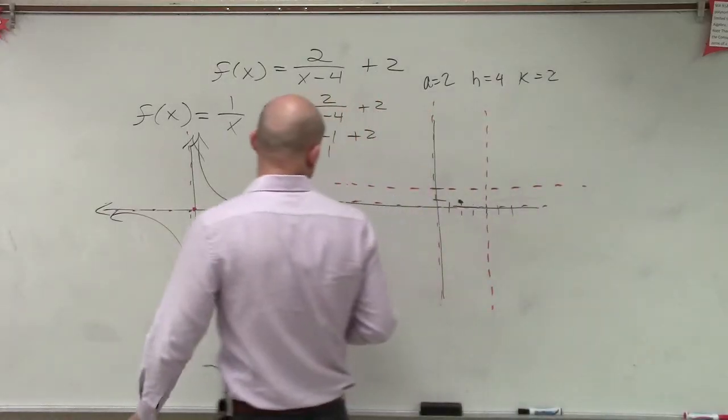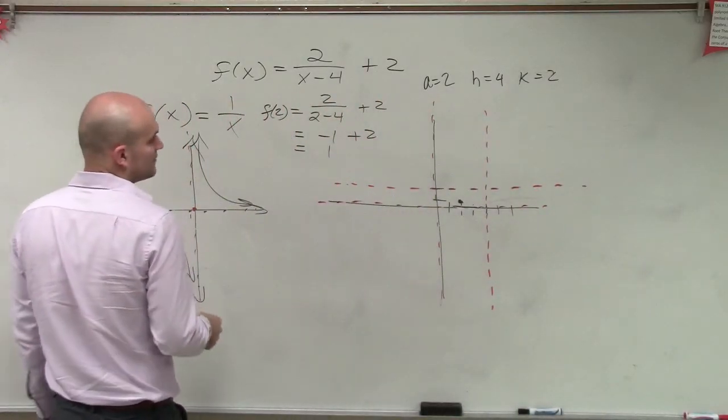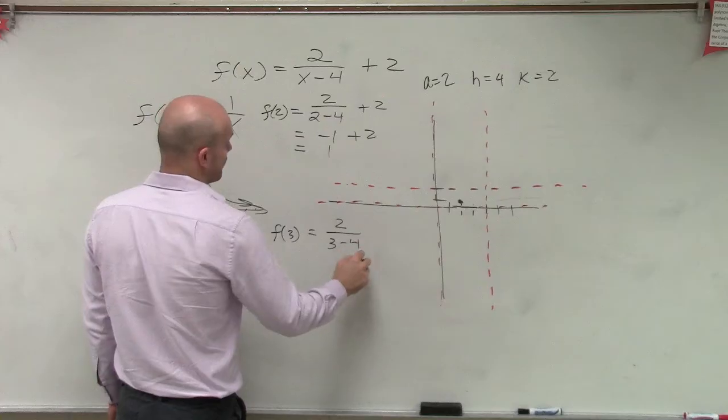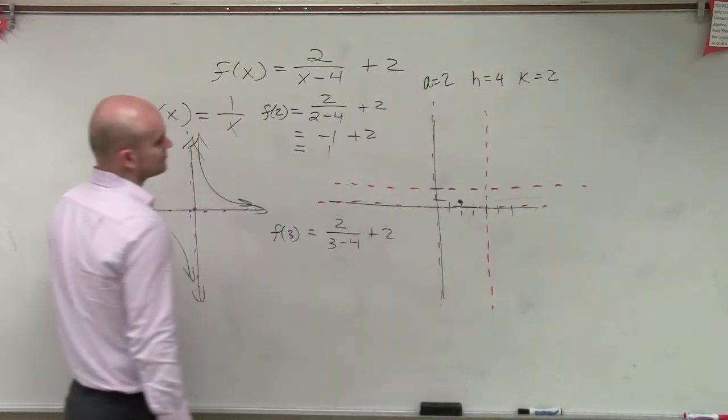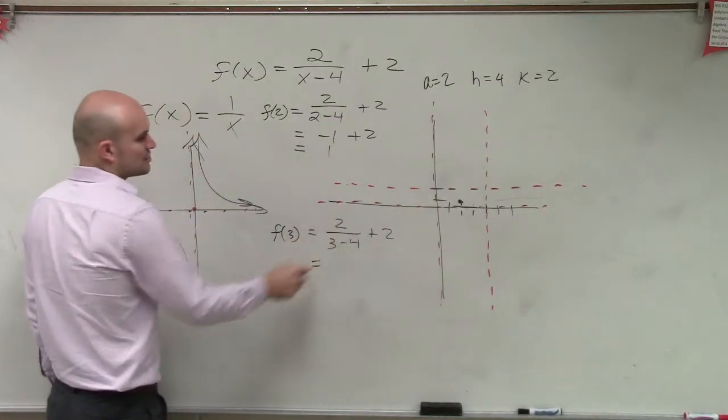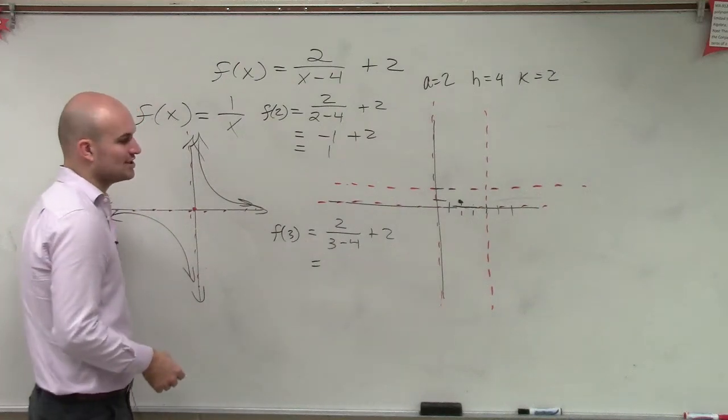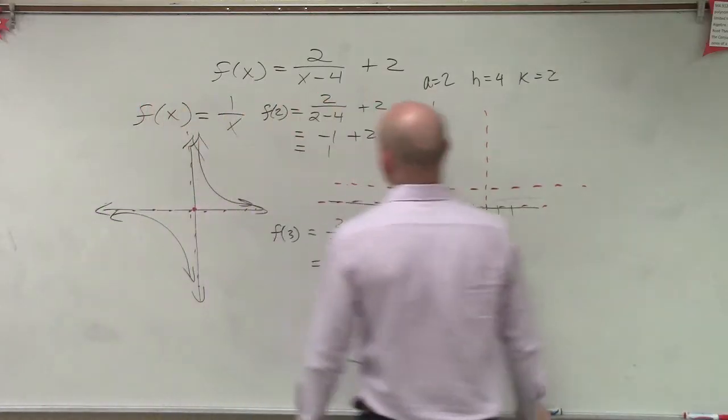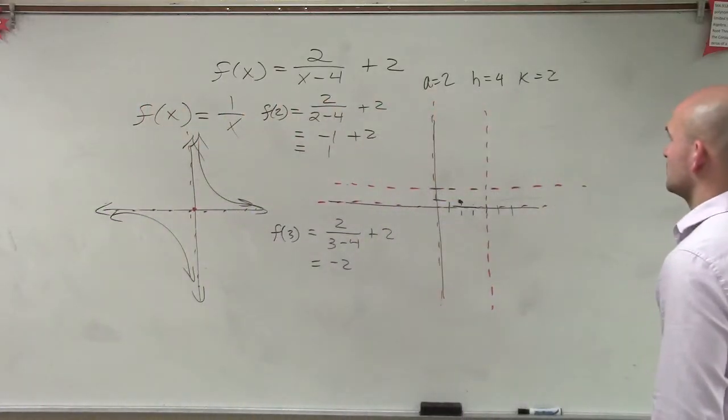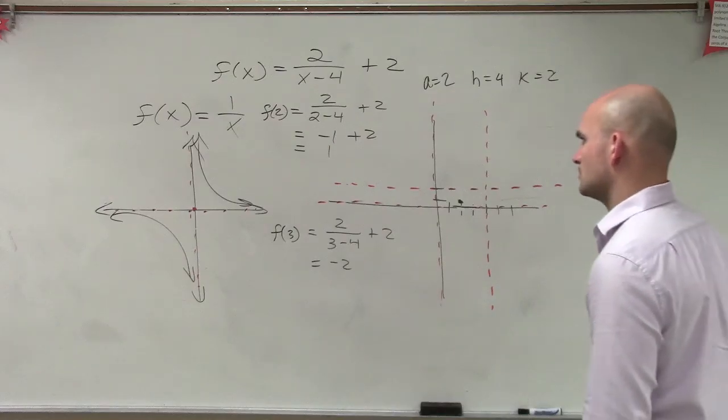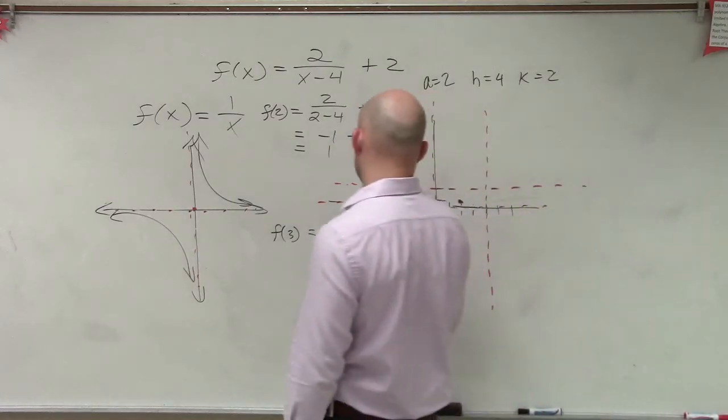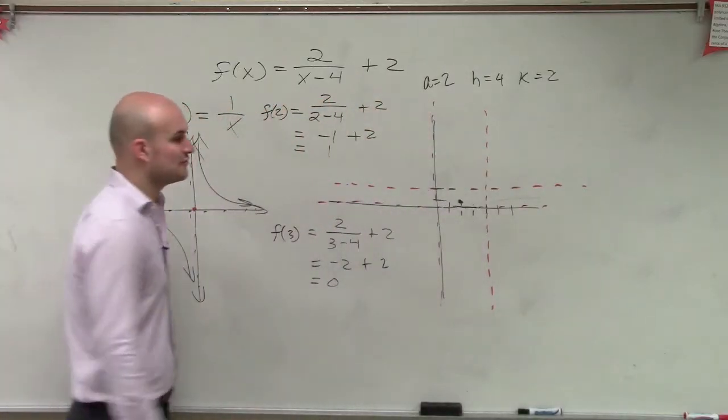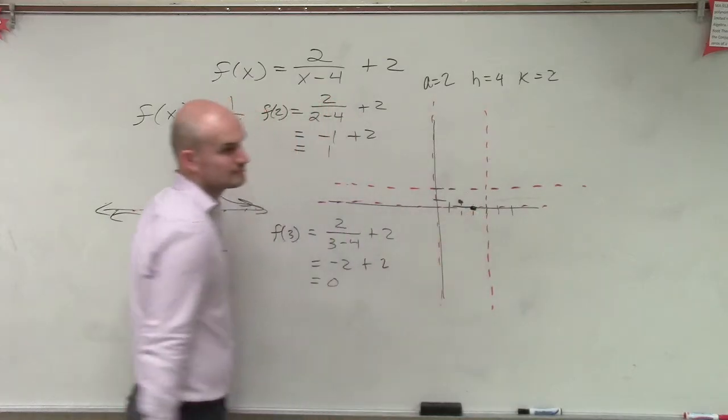Now let's do f of 3. So now I do 2 over 3 minus 4 plus 2. 3 minus 4 is negative 1. 2 divided by negative 1 is negative 2. Wait a minute. Why did I shift up 3? What's wrong? So therefore, that equals 0. So at 3, I'm at 0.